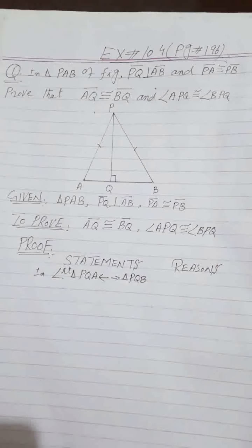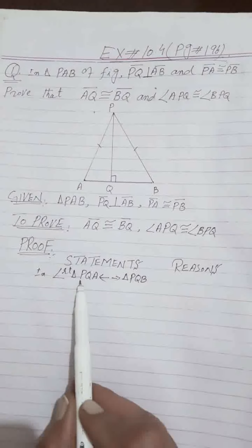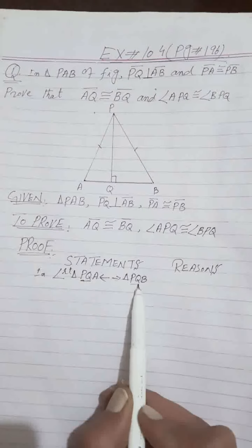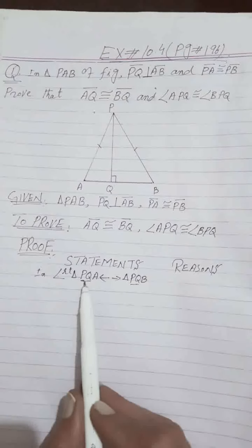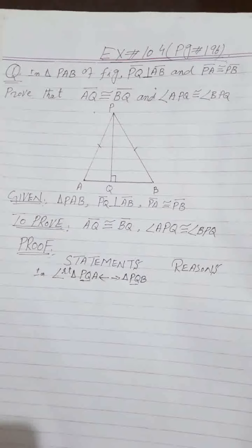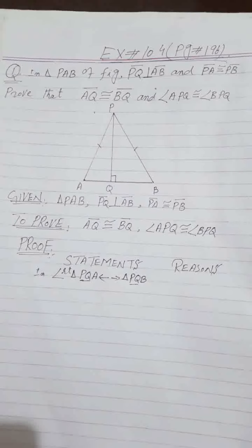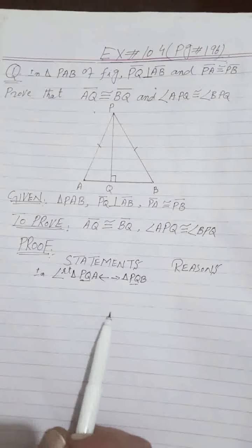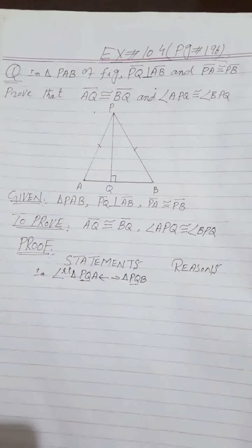In each theorem, I will explain how to make pairs. The first pair is PQ and PQ — these are common to both triangles. You check three headings for each pair: given, common, and construction. PQ and PQ are common.